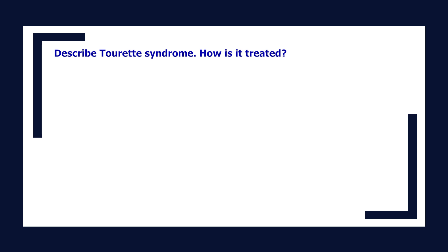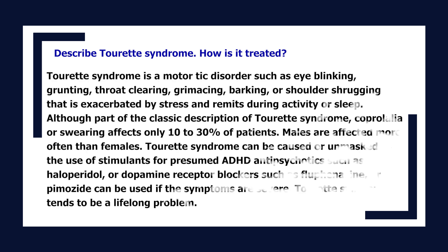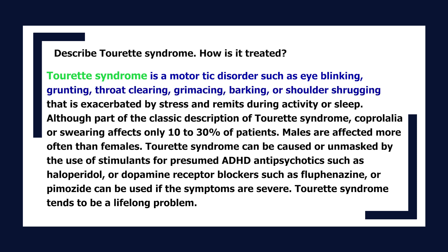Describe Tourette syndrome and how it is treated. Tourette syndrome is a motor tic disorder such as eye blinking, grunting, throat clearing, grimacing, barking, or shoulder shrugging — exacerbated by stress and remits during activity or sleep. Although part of the classic description, coprolalia or swearing affects only 10–30% of patients. Males are affected more often than females. Tourette syndrome can be caused or unmasked by stimulants used for ADHD. Antipsychotics such as haloperidol or dopamine receptor blockers such as fluphenazine or pimozide can be used if symptoms are severe. Tourette syndrome tends to be a lifelong problem.